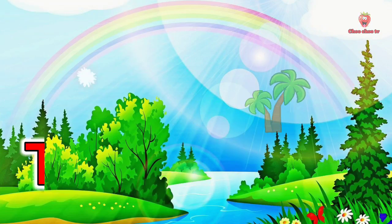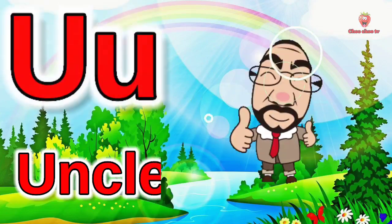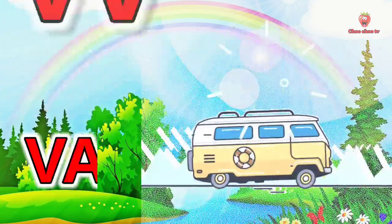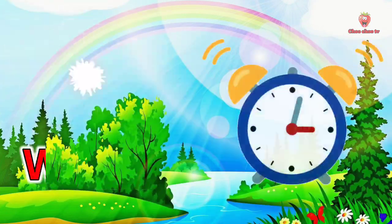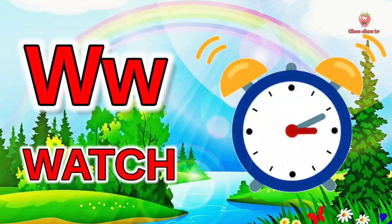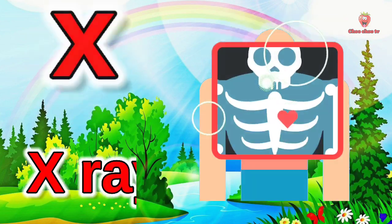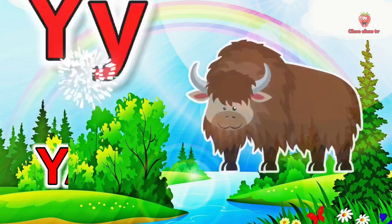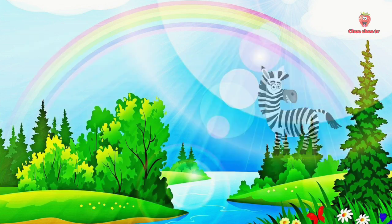T for tree, U for uncle, V for van, W for watch, X for x-ray, Y for yak, Z for zebra.